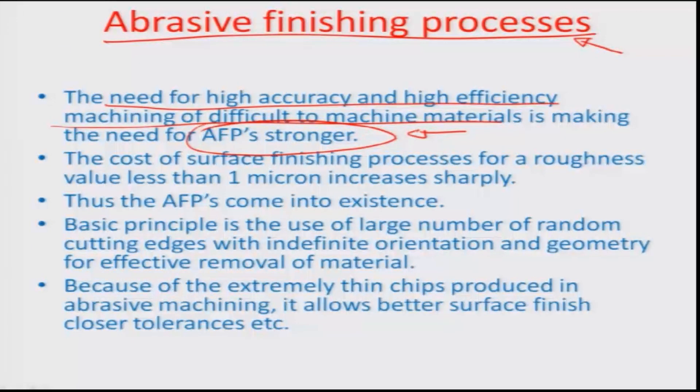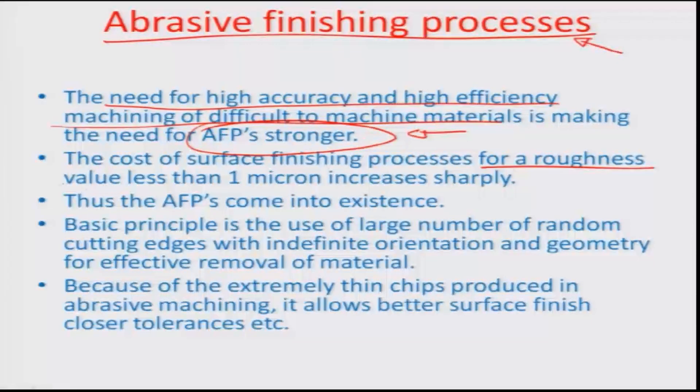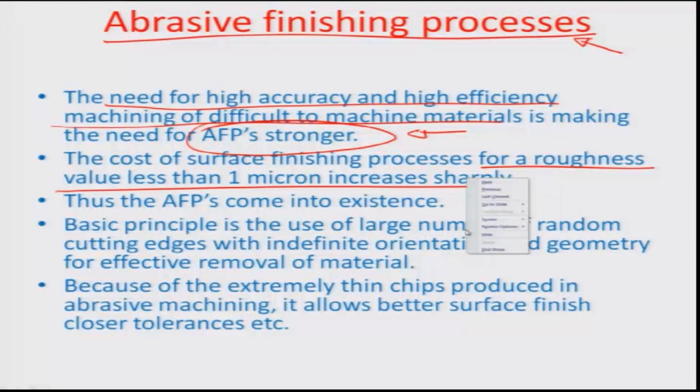For example, if you wanted to finish a piece of silicon to less than a micron surface finish, it is very important that we deploy some processes apart from the routine CMP or chemical mechanical polishing, to achieve the surface finish with a high yield. The cost of surface finish processes for a roughness value in the submicron range has increased quite sharply, and therefore all the more needs these AFPs or abrasive finishing processes — that is one of the reasons why they are in existence.